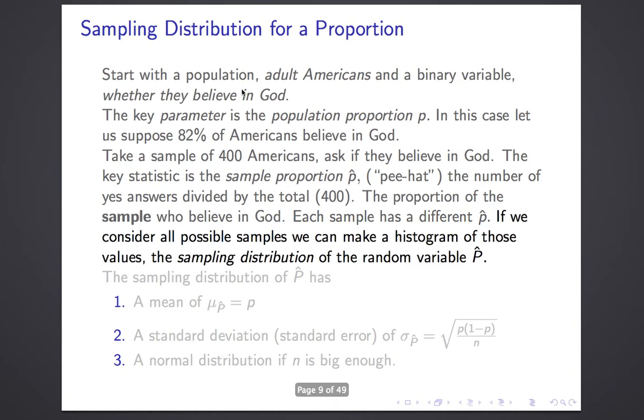If you imagine all the possible samples you could take of size 400 of adult Americans and wrote down the P-hat for each one, you'd have a huge list of numbers. My question is, if you made a histogram from those numbers, what would it look like? Here I'm viewing a random process as picking a simple random sample of 400 people and computing the sample proportion P-hat. That is a repeatable process, an uncertain outcome, and the outcome's a number. It's a random variable.